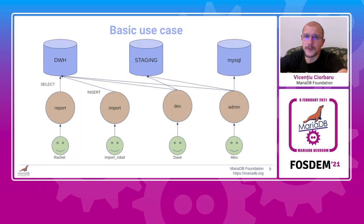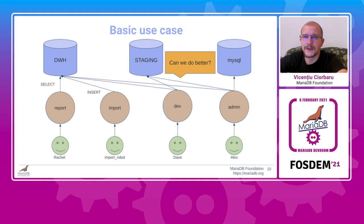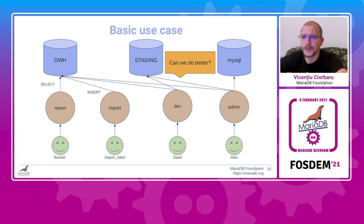Visually, roles are shown in brown circles. Users are at the bottom. An arrow represents a grant. So Rachel got the report role, and the report role in turn has the SELECT privilege. The same applies for import, dev, and admin. Notice that there is a lot of redundancy between the dev and the admin role. The question is, can we do better? The point is to simplify database administration.